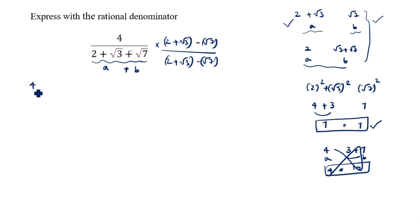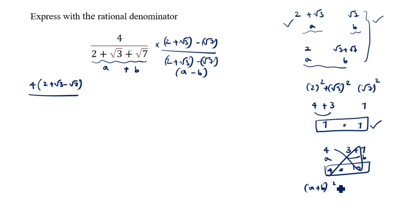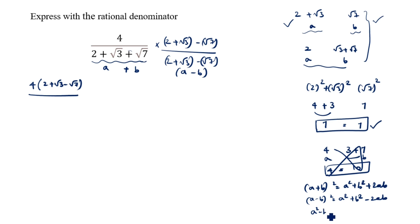We open the bracket: 4 times (2 plus root 3 minus root 7) in the numerator. The denominator is (a plus b)(a minus b), which equals a² minus b² by the identity (a + b)(a − b) = a² − b².